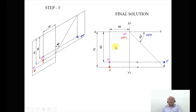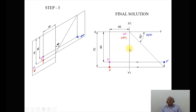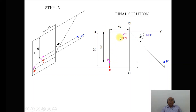This is the final solution. Draw the XY line and X1Y1 line slightly thicker than the projector lines, and identify the planes: VP, HP (shown in brackets as it is rotated), and RPP towards the right. The distance from the profile plane, 40 mm, is taken from X1Y1. Measure 40 mm and draw a vertical projector. The 60 mm below HP is seen in the vertical plane below the XY line — mark this point as the front view, p'. The 70 mm in front of VP is measured from the XY line on HP and marked as small p.